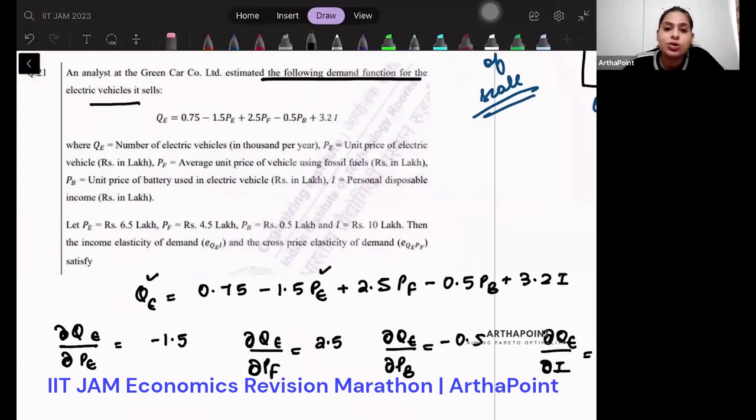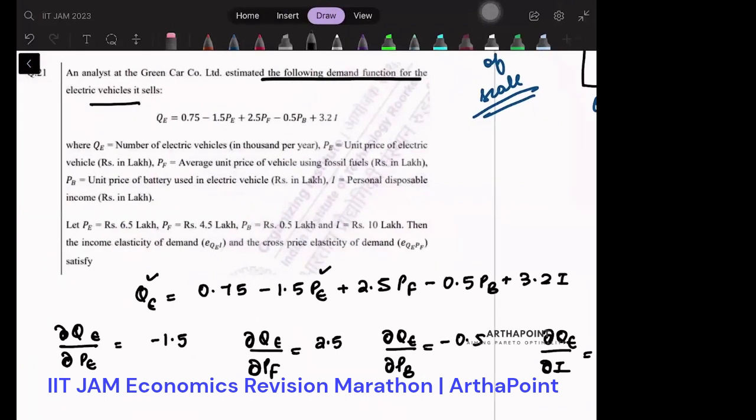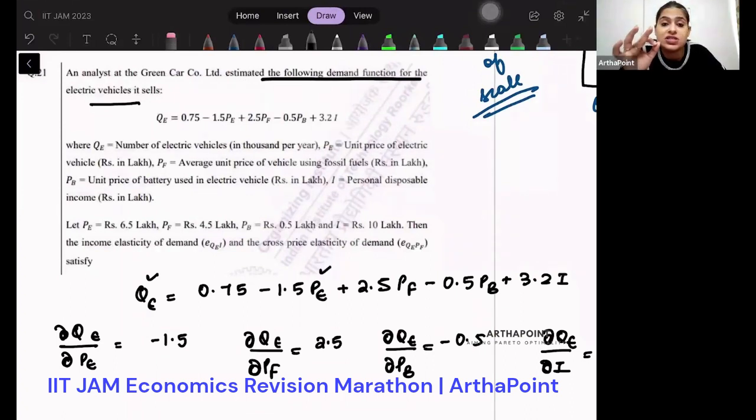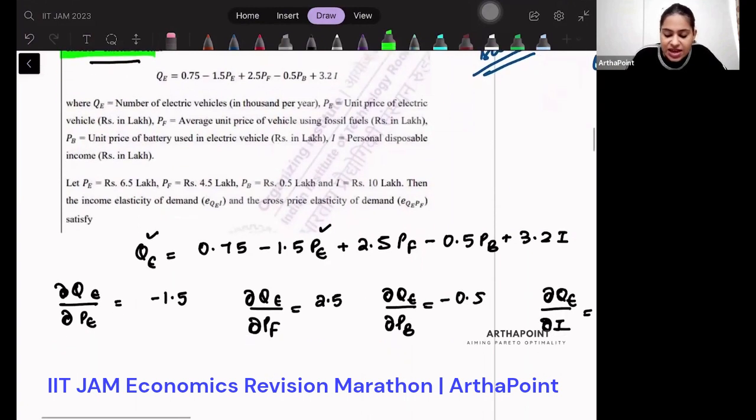So just by looking at this, you should be able to give the properties of this function, the properties of this good. So the good that I am talking about here is the electric vehicle. This elasticity is negative. For sure, it is not a Giffen good. It has to be a normal good. Its price elasticity is negative, so we understand that it is a normal good, not a Giffen good.